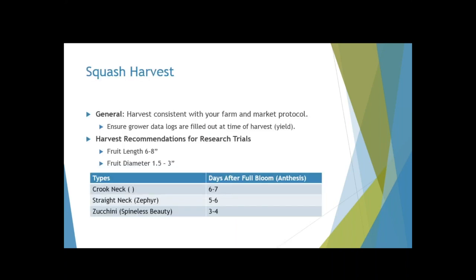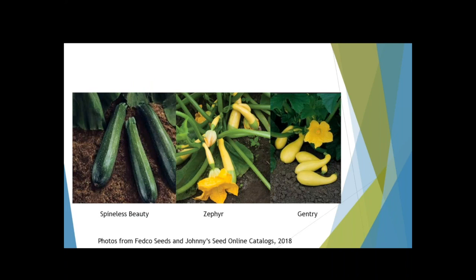Moving on to summer squash harvest — again, harvest consistently with your farm and market protocol and record within these parameters. For instance, fruit length of six to eight inches or fruit diameter of one and a half to three inches. Varieties in the trial range from crookneck to straight neck to spineless beauty zucchini.